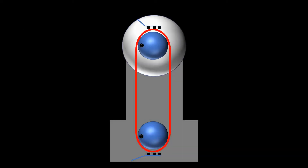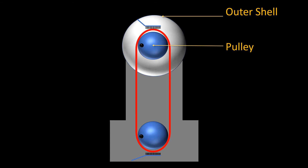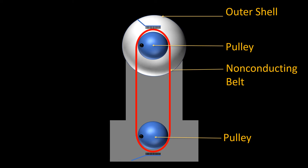So here is a schematic diagram of the 1d graph generator. We have the outer shell and then we have the inner shell and a pulley on the upper side. On the lower side we have one more pulley which can be rotated, and the two pulleys are connected by a conveyor belt which is non-conducting. On the lower side we have a brush which, when rubbed with the belt, produces charges on the conveyor belt. There is also a conducting brush between the outer shell and inner shell which is in contact with the belt.